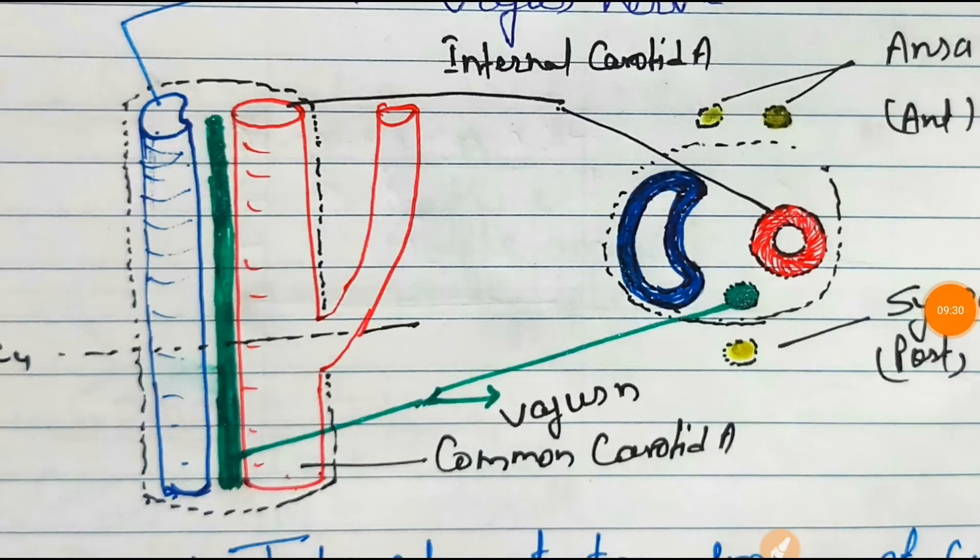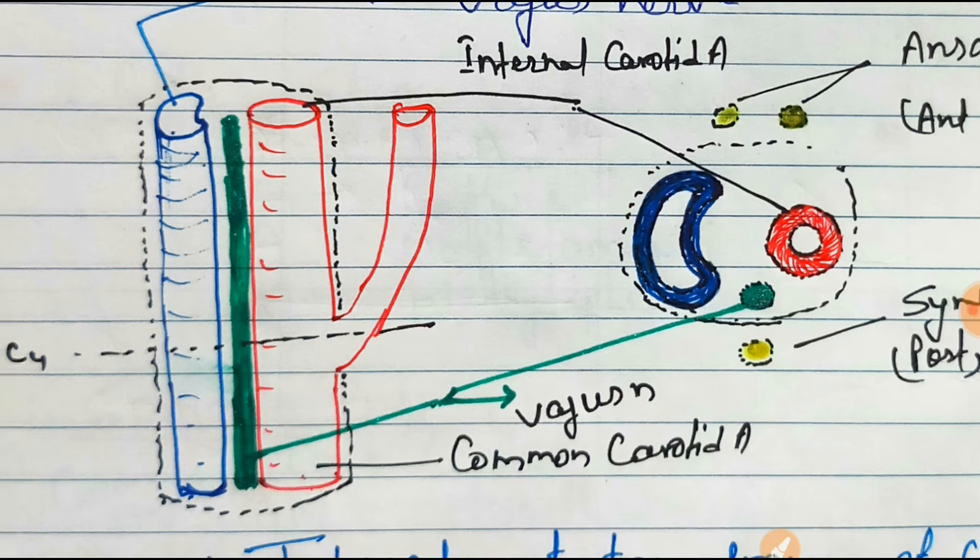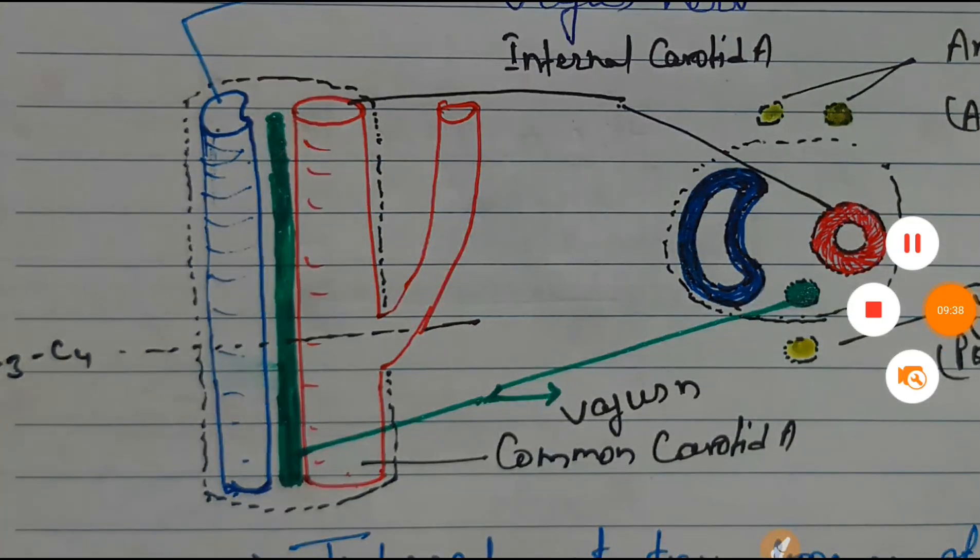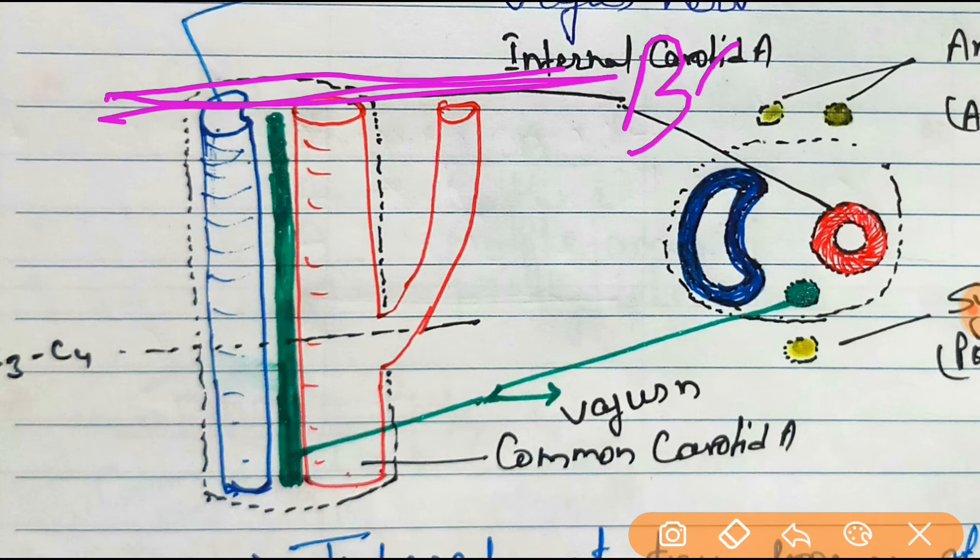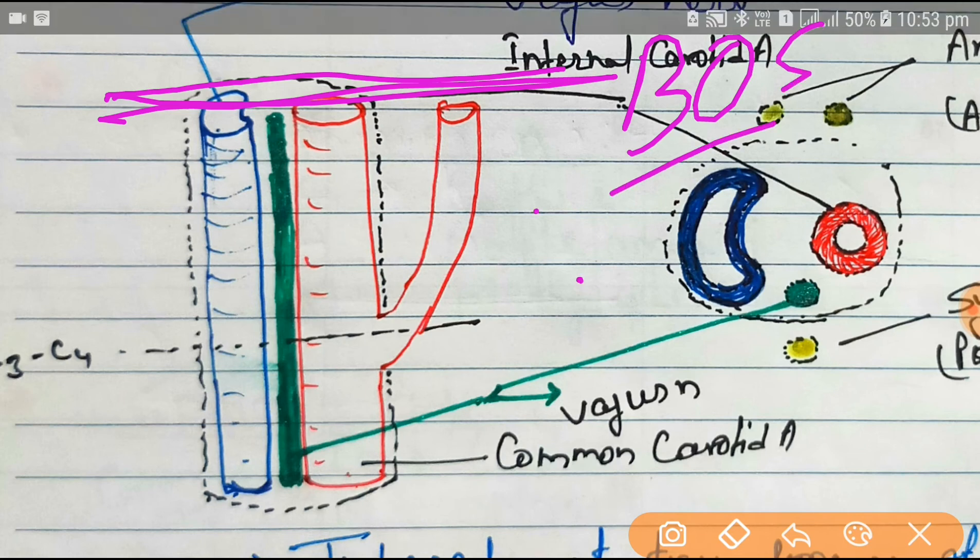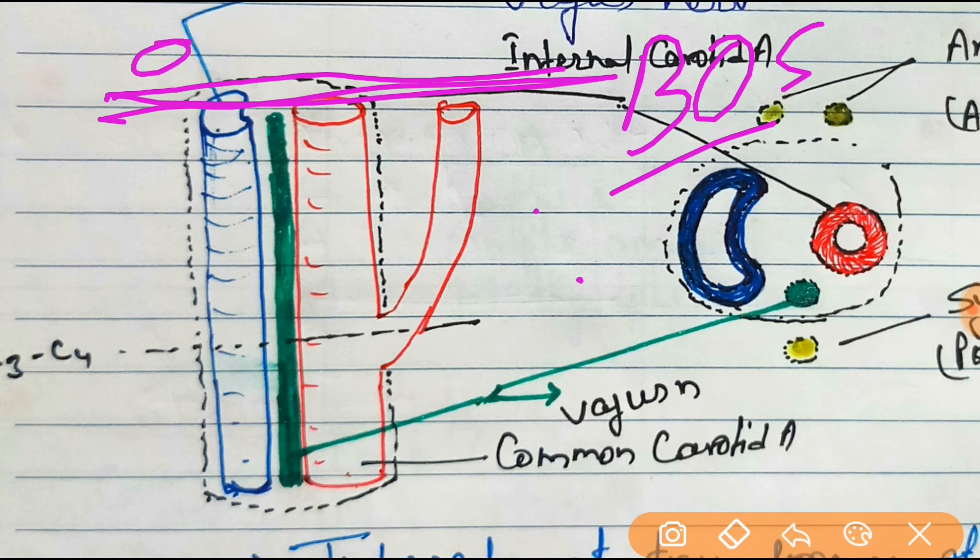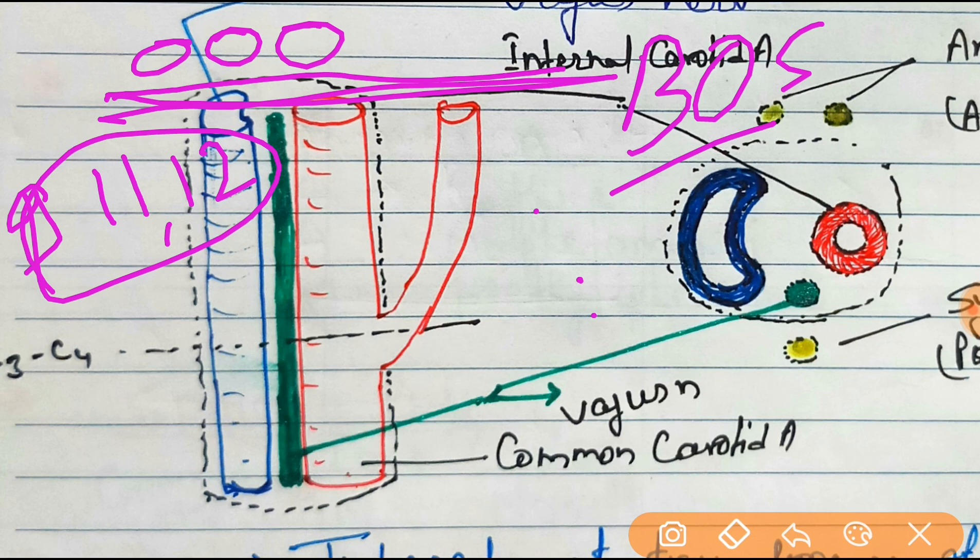Posterior to that, one thing you have to remember: if you see here, according to the diagram, at the base of the skull, three nerves are present which you have to remember: cranial nerves 9, 11, and 12. Okay friends, thanks for watching my video, have a nice day.